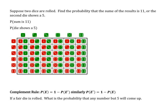Suppose two dice are rolled. Find the probability that the sum of the results is 11, or the second die shows a 5. The sum equals 11 in 2 options out of 36: the combinations 6 and 5, and 5 and 6. The second die shows a 5 in 6 options out of 36. The overlap — where the sum is 11 and the second die shows a 5 — is 1 option. So 2 plus 6 minus 1 gives us 7 out of 36.